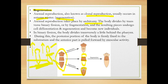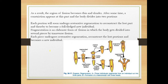This is binary fission. In binary fission, the posterior part and the anterior part separate. Each portion soon undergoes regeneration to reconstruct the missing parts. The anterior part begins to regenerate. Fragmentation is an elaborate form of fission in which the body gets divided into several pieces.